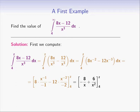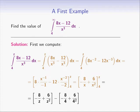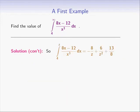Let's substitute the bounds 4 and z and take the difference. We get negative 8 over z plus 6 over z squared minus (negative 8 over 4 plus 6 over 4 squared). This simplifies to negative 8 over z plus 6 over z squared plus 13 over 8. So we have shown that the integral from 4 to z of (8x minus 12) over x cubed dx equals negative 8 over z plus 6 over z squared plus 13 over 8.